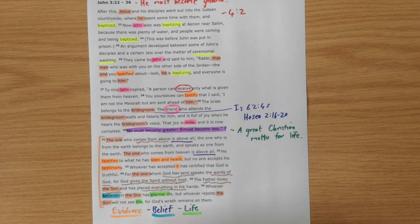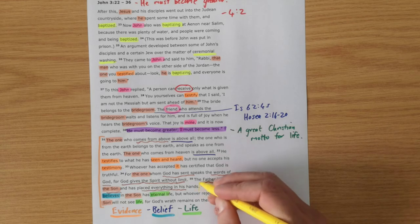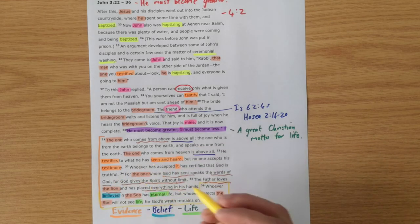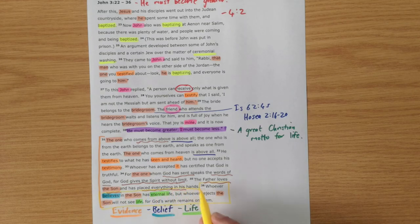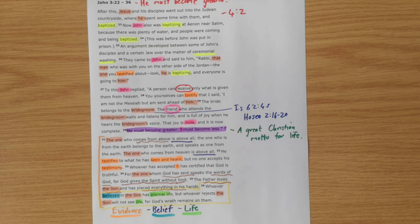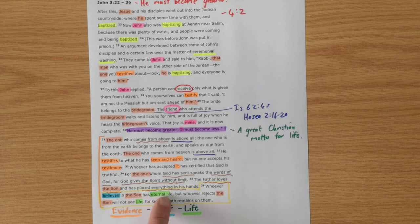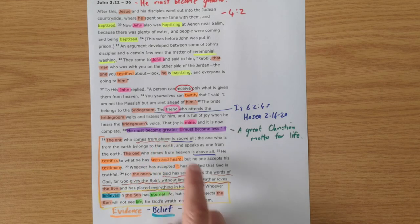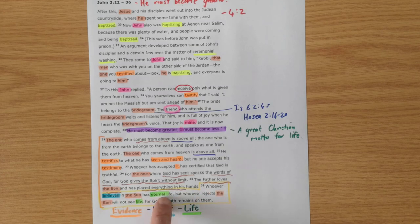Why is all of this so important? Why does John give us this evidence? Well, verse 36 fleshes that out for us. Gives us the reason. We see these ideas of belief and life come out here. Whoever believes in the Son has eternal life. That's why he must become greater. His greatness needs to be made known because those who believe in him can have life.